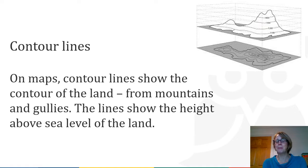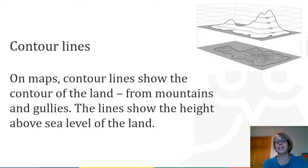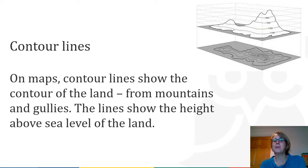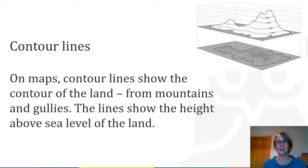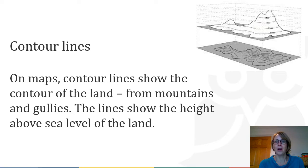Contour lines are often accompanied by a number which is usually the number of meters above sea level, and if you looked at the legend or the key on the map it would show you that. The diagram here shows you what the mountain would look like as a 3D model and then below it, if you were just to see the contour lines drawn on a flat piece of paper. Now we're going to hear from a bit of an expert on how contour lines work on maps.